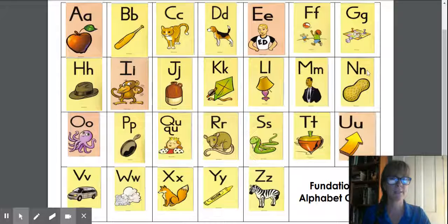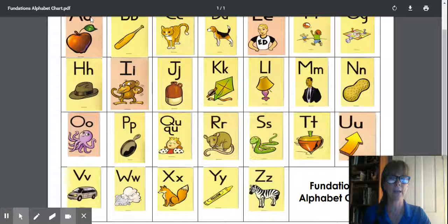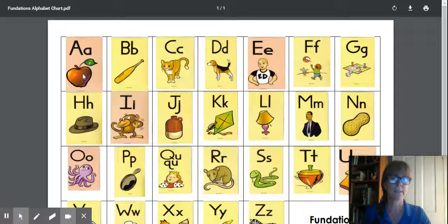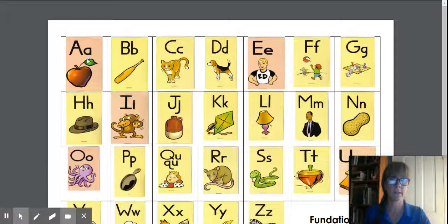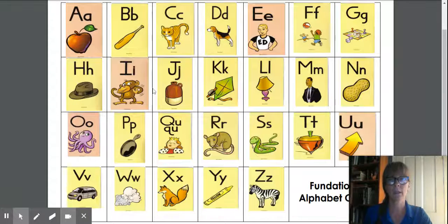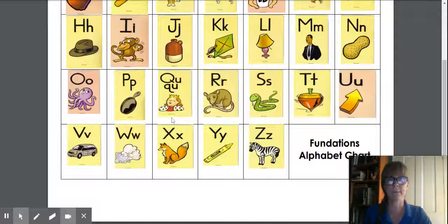So that's the first half of the alphabet. So you would say the letter when you're practicing. Say the letter, say the picture, and then the picture is going to help you with the sound. So it's letter, picture, sound. Letter, picture, sound. All right, let's move on to the second half of the alphabet.